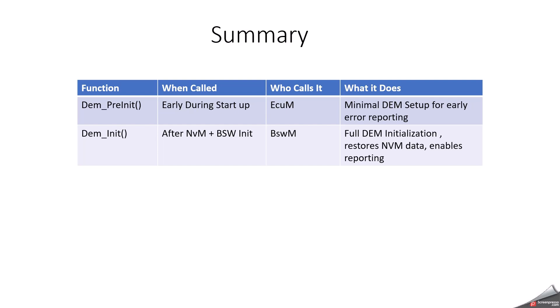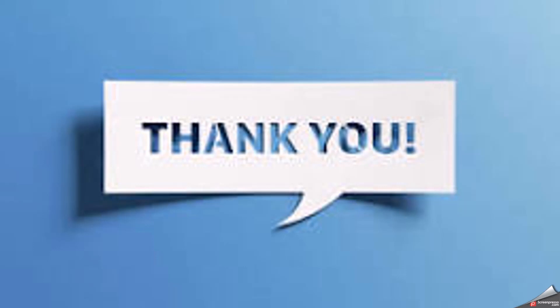In summary: DEM pre-initialization is called during very early startup and is managed by ECM — it provides minimal DEM setup for early error reporting. DEM initialization happens after NVM and BSWM initialization and is called by BSWM — it takes care of full DEM initialization, restores NVM data, and enables reporting. Check your project to see how DEM pre-initialization and initialization are managed. If you have any points, please add them in the comments. Thank you so much. Have a nice day.